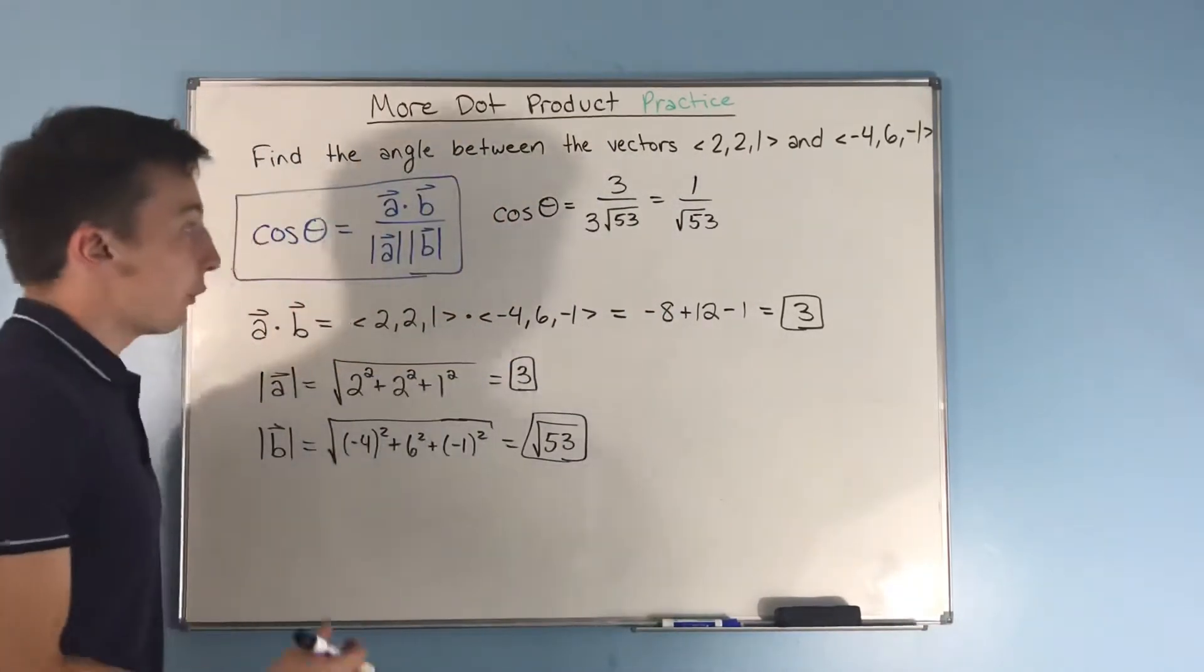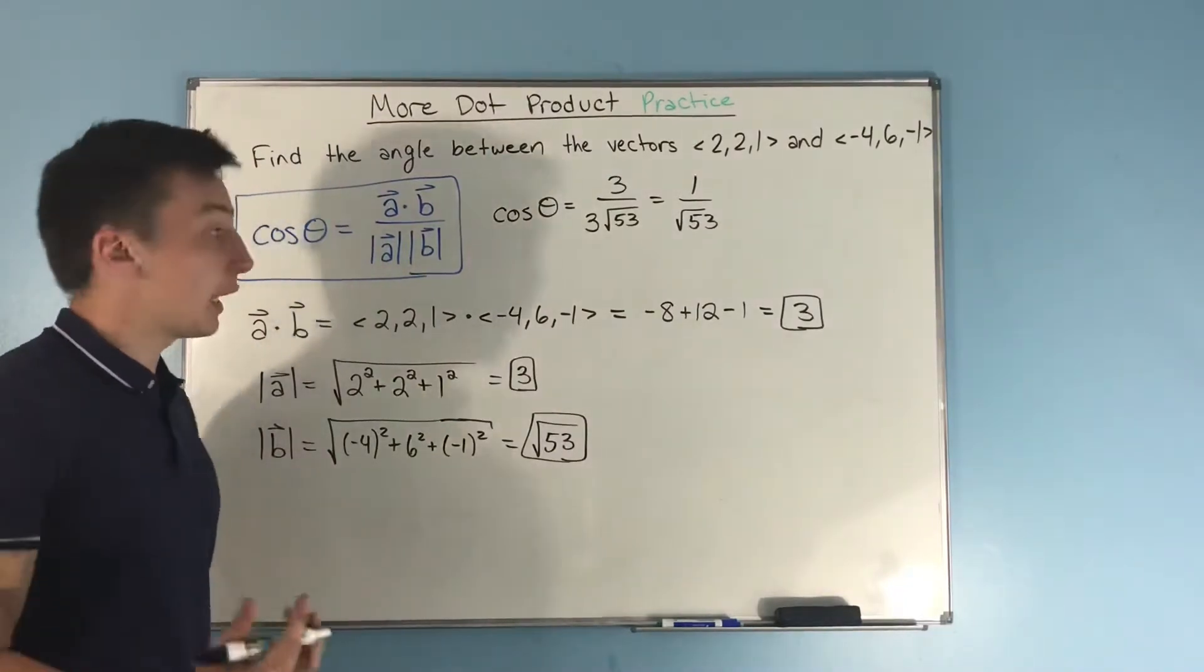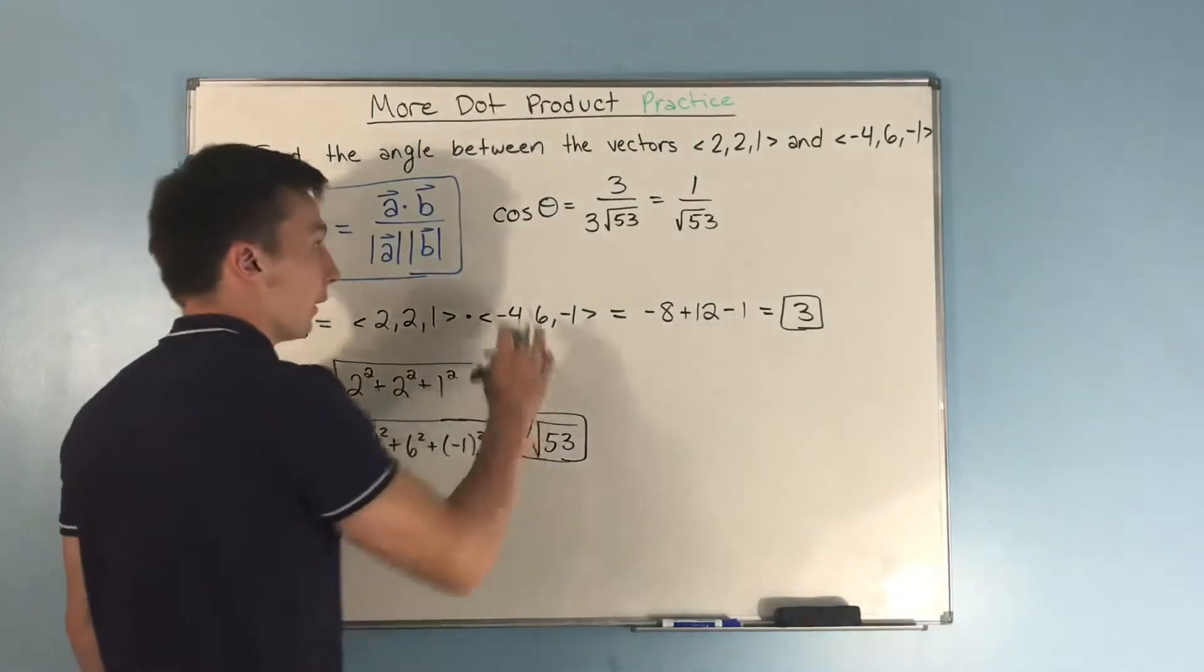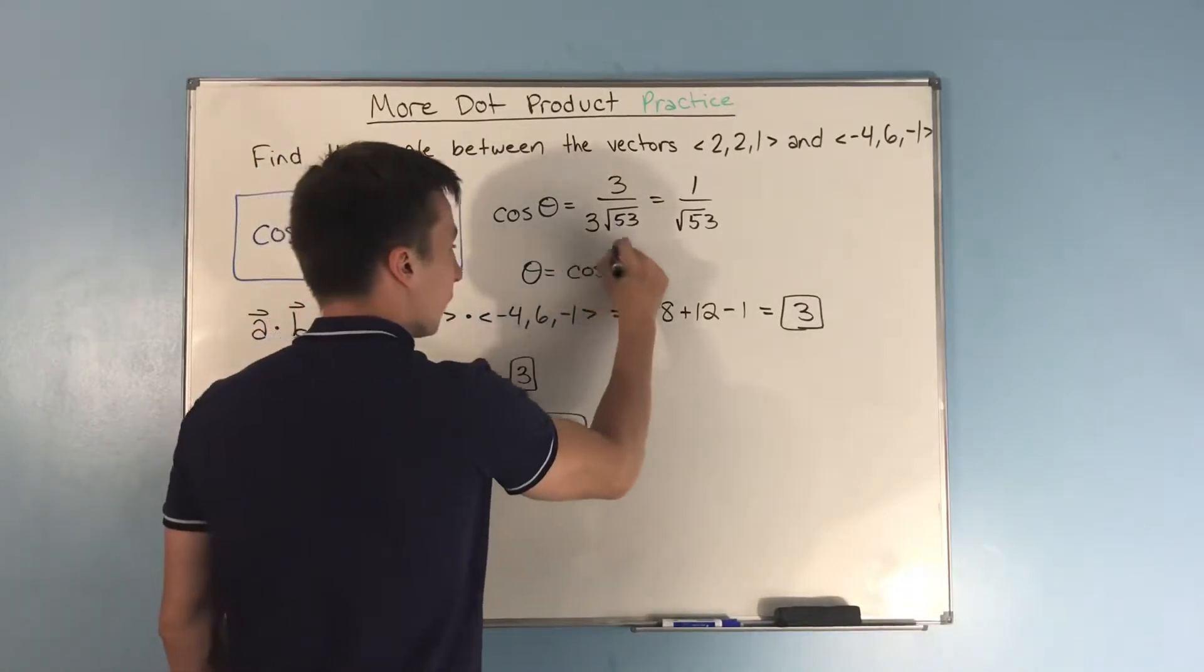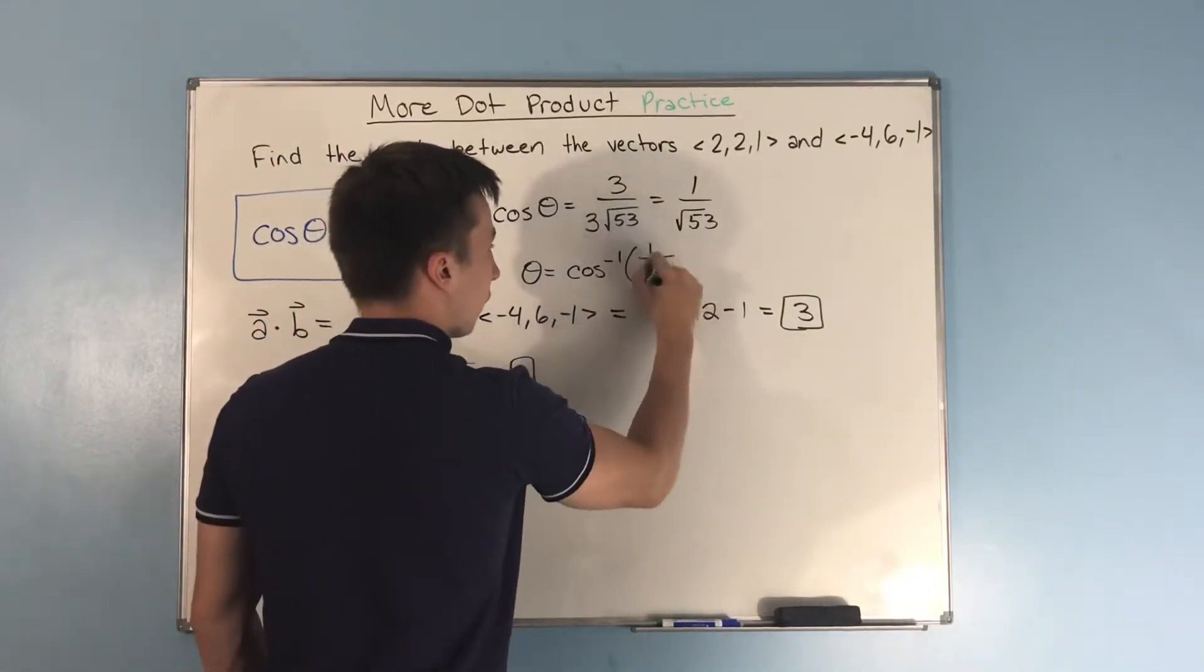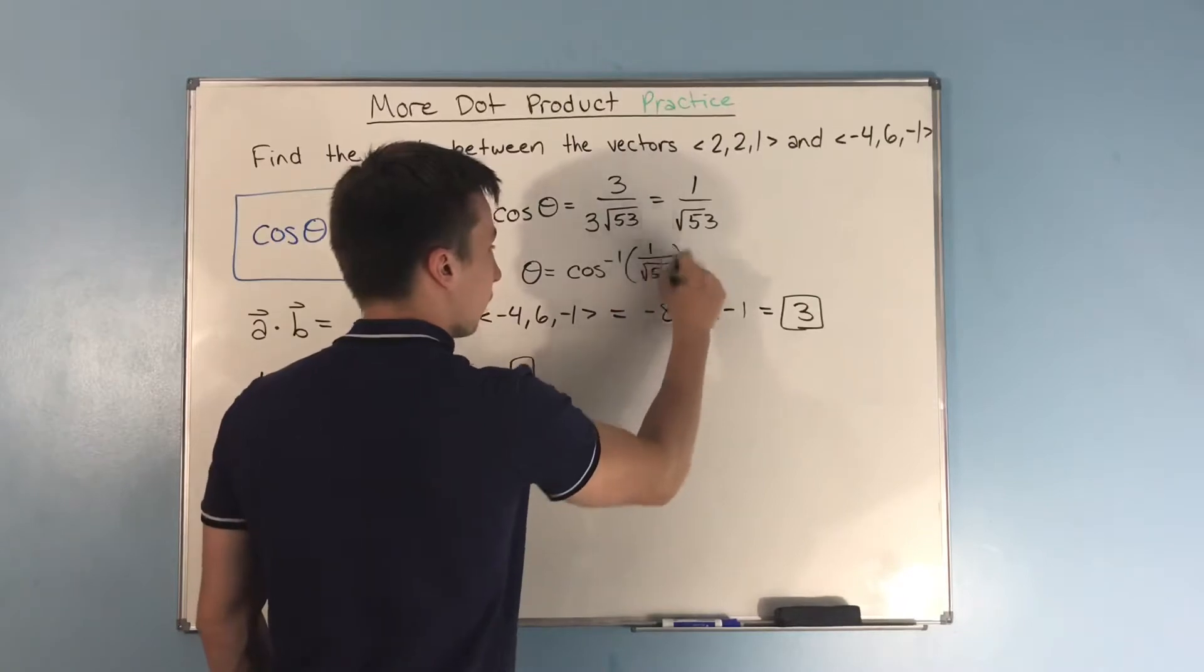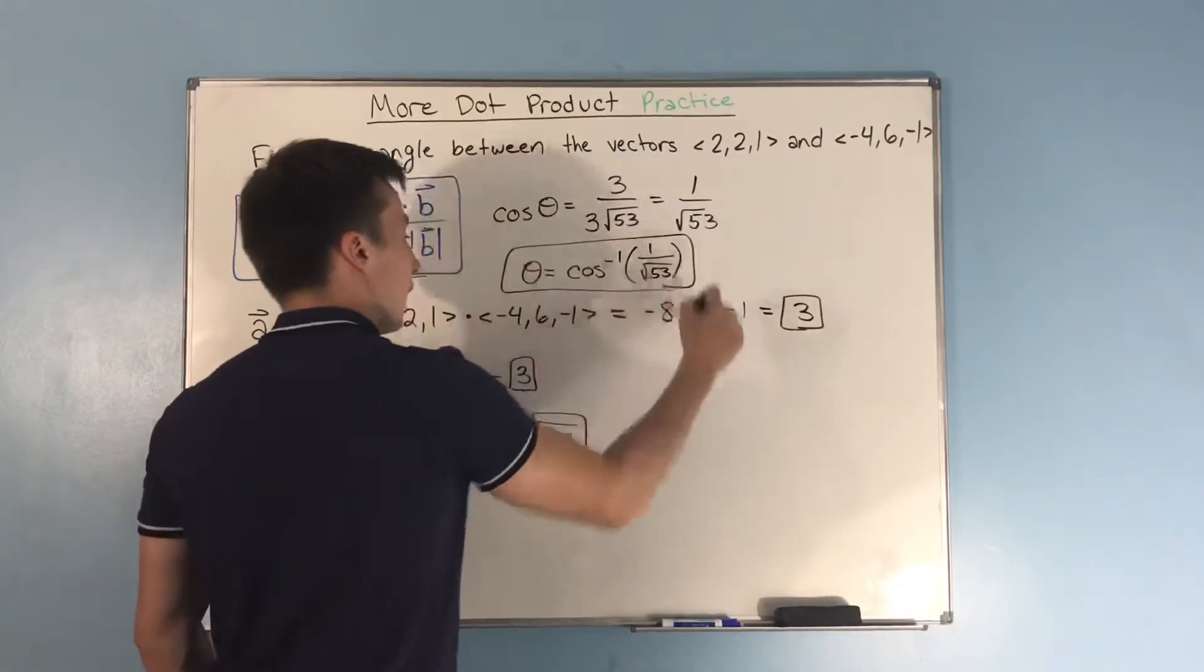And really, that just boils down to 1 over rad 53. Now, if we take the inverse cosine on each side, we get theta equal to the inverse cosine of 1 over rad 53. There you go. That is your angle.